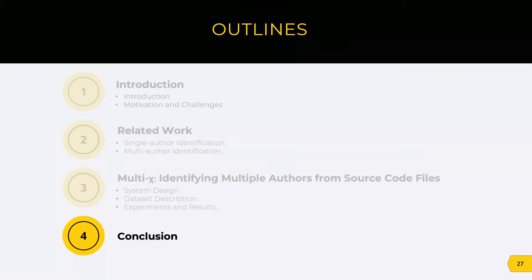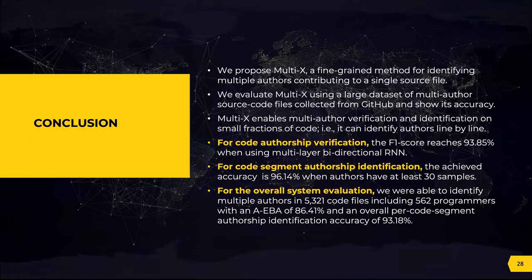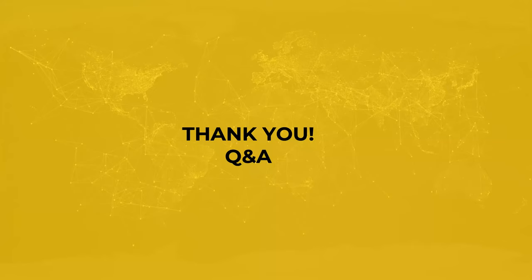Finally, the conclusion. We propose Multi-X, a fine-grained system for identifying multiple authors in a single source file. We evaluate Multi-X using a large dataset. For code authorship verification, Multi-X achieved an F1 score of more than 93% using multi-layer bi-directional RNN. For code segment authorship identification, the achieved accuracy is more than 96% when authors have at least 30 samples. For the overall system evaluation, we were able to identify multiple authors in more than 5,000 code files with an example-based accuracy of more than 86% and an overall per code segment authorship identification accuracy of 93%. Thank you.